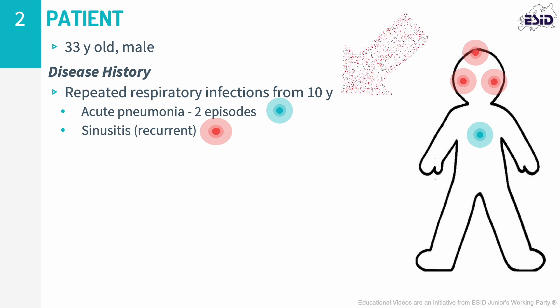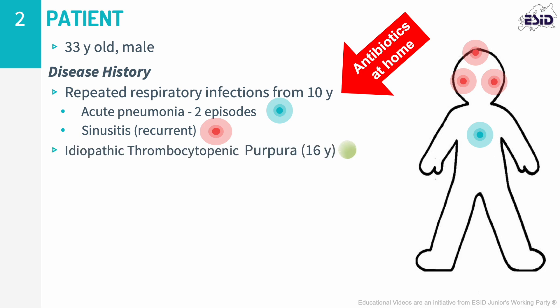Infections were usually treated with antibiotics at home. His past medical history was significant for one episode of idiopathic thrombocytopenic purpura at 16 years of age. During the previous months he reported progressive worsening dyspnea, fever and lymphadenopathy. His symptoms failed to respond to several courses of antibiotics prescribed by his primary care physician.